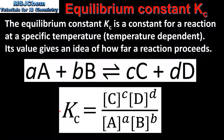Here we have the equilibrium constant expression for the above reaction. In the numerator we have the concentrations of the products C and D raised to the powers of their coefficients. In the denominator we have the concentrations of reactants A and B also raised to the power of their coefficients.